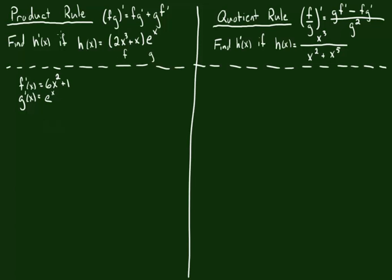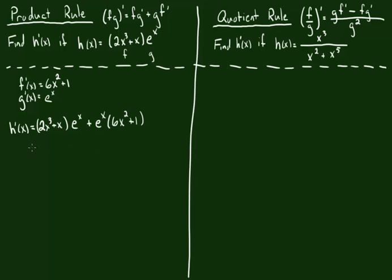Now we have every bit of information we need to use the product rule. The derivative of this product of two functions is going to be the original first function, 2x cubed plus x, times the derivative of the second function, which is e to the x, plus the second function itself, also e to the x, times the derivative of the first function, which is 6x squared plus 1. At this point, the derivative is done — we don't have to do anything more.